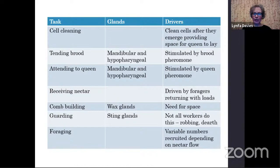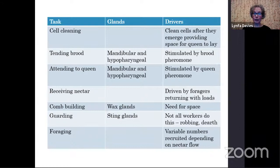Moving on to tending and nursing the brood, this relies on the development of the mandibular and hypopharyngeal glands within the head of the bees, which secrete the brood food fed to developing brood. These tasks can only take place when the bees are old enough to have well-developed glands, which actually develop quite early in their lives. They're stimulated by brood pheromones — the open brood, where very young larvae are, produces its own pheromone which stimulates nurse bees to come and feed them.